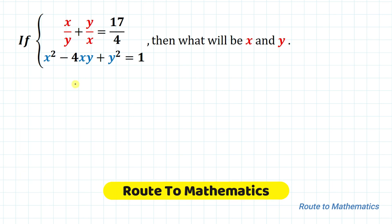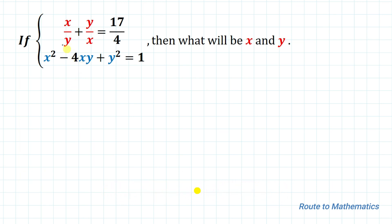Hello everyone, welcome to Root 2 Mathematics. In this video we are going to solve these equations. The given equation is x/y + y/x = 17/4, and the second equation is x² - 4xy + y² = 1. We are given two equations and asked to find the variables x and y. Without any delay, let's start the solution.